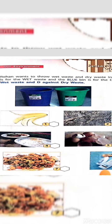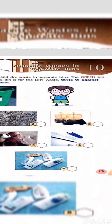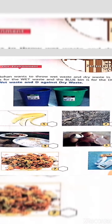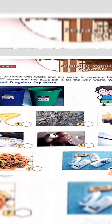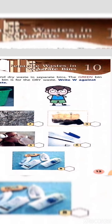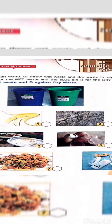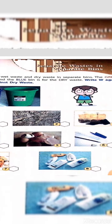First is fruit peels. Second is paper. Third is bottle. Fourth is plates. Five — eggshells. Six — metals. Seven — food items. Eight — wrappers.